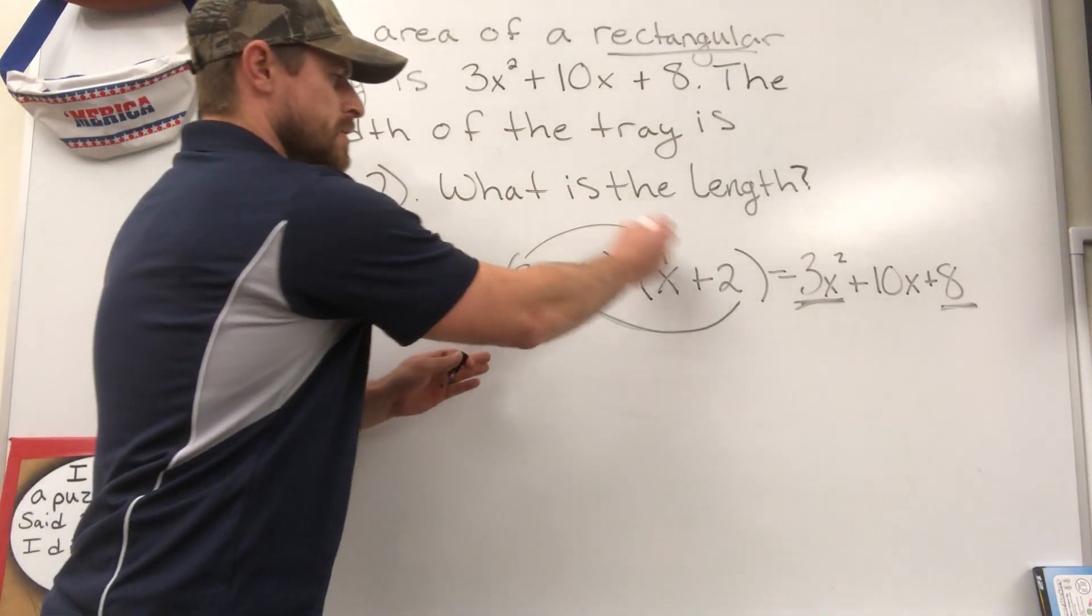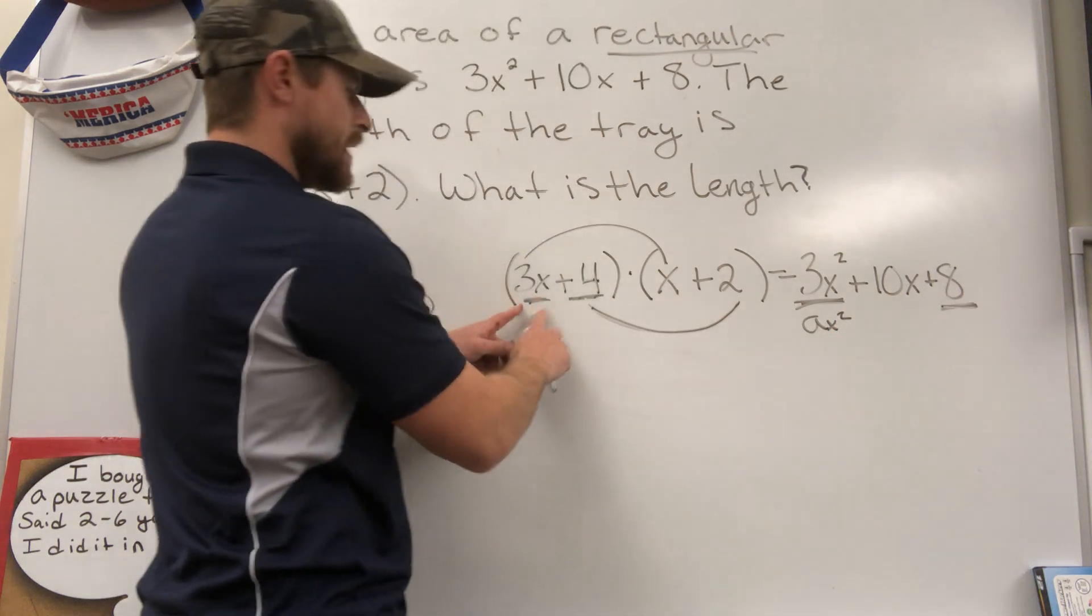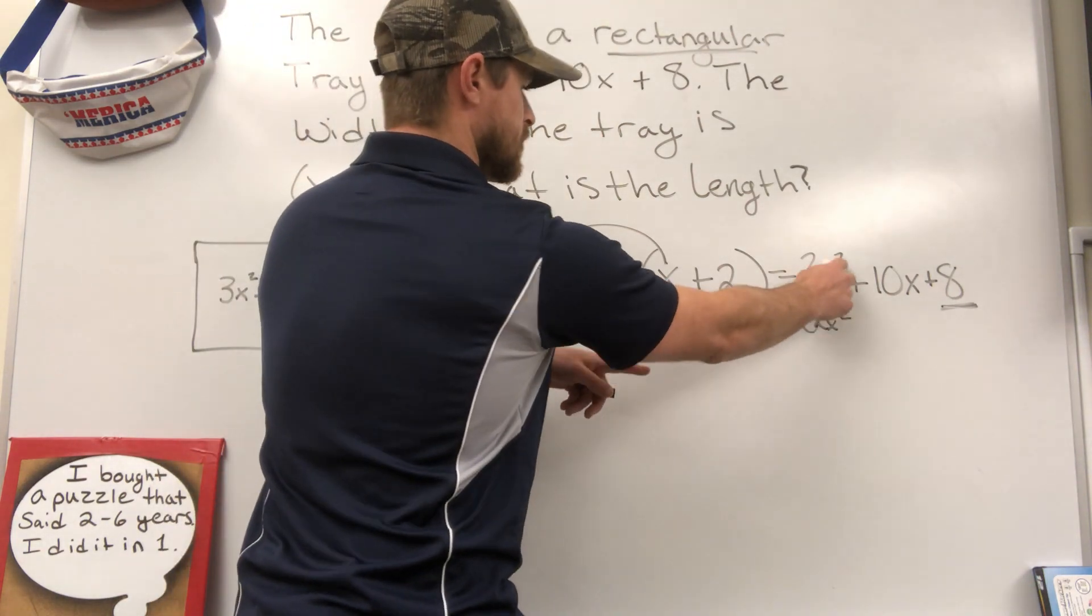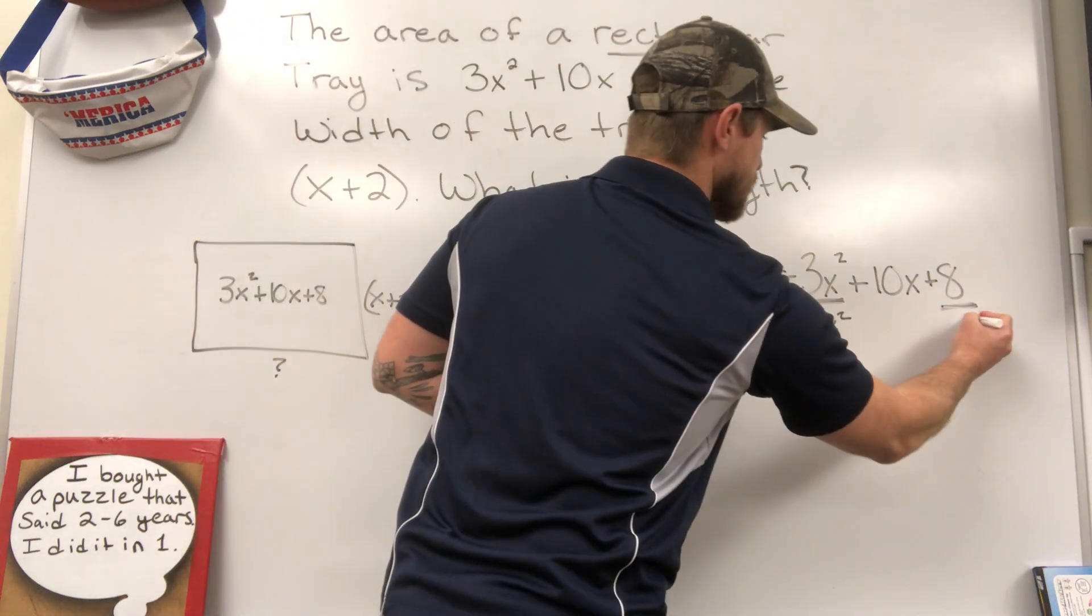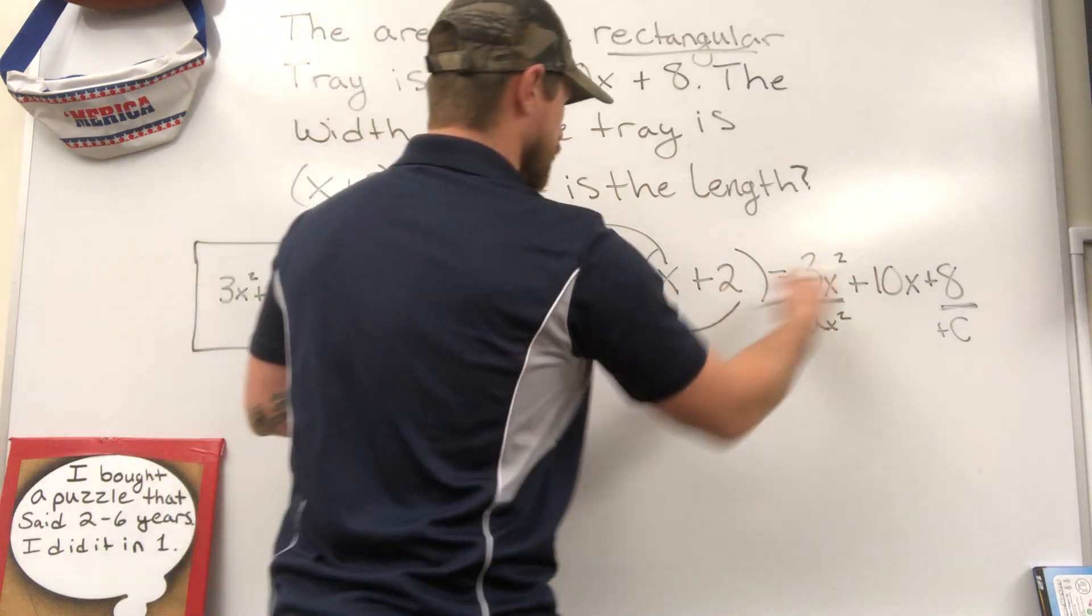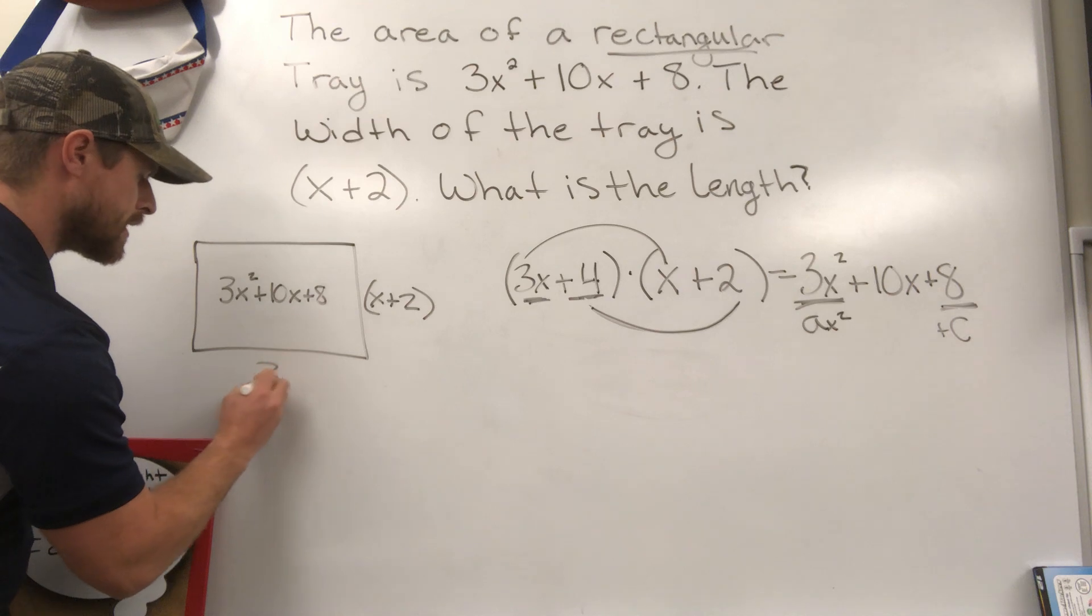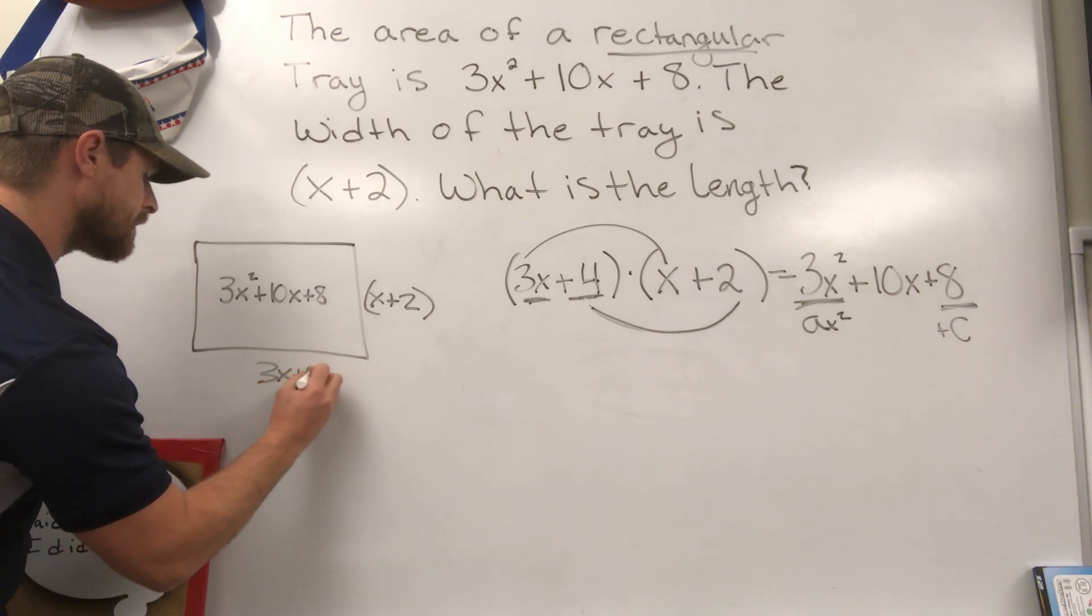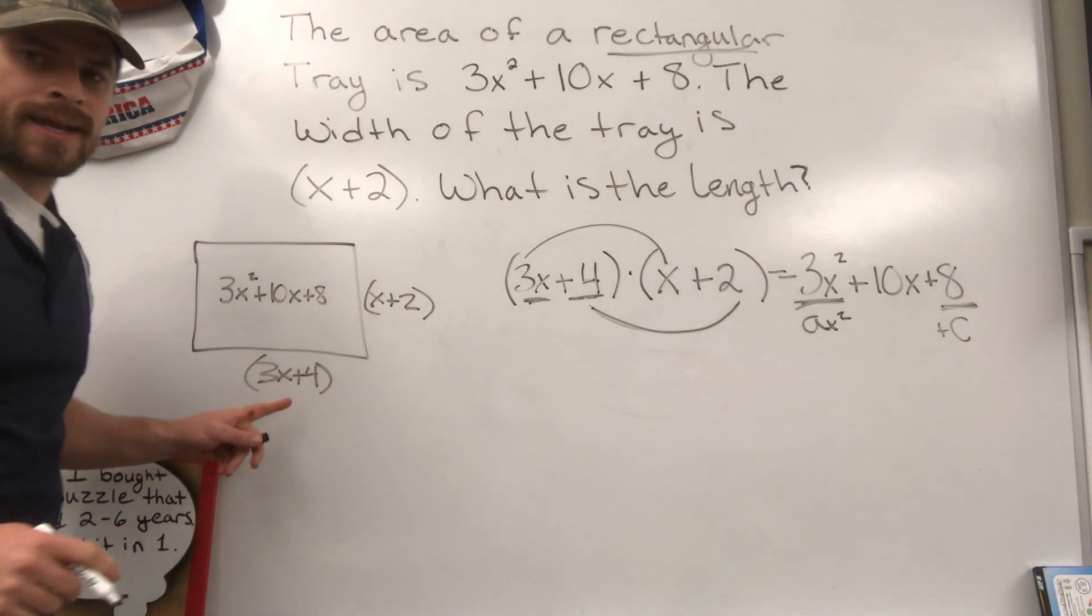First terms will create the ax squared. So 3x times x makes 3x squared. 4 times 2 creates my plus c at the end. Four times 2. So right now I can go down here and I can say my length is 3x plus 4. I now know my width, I know my length.